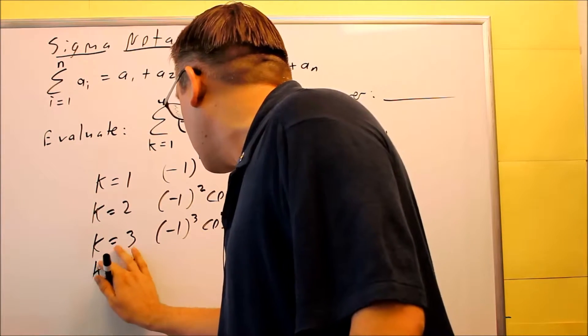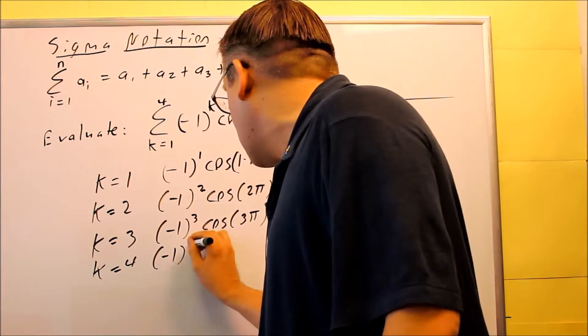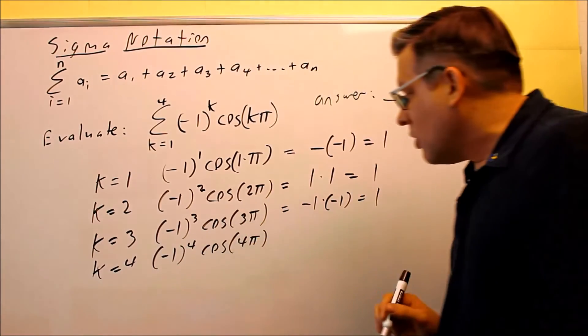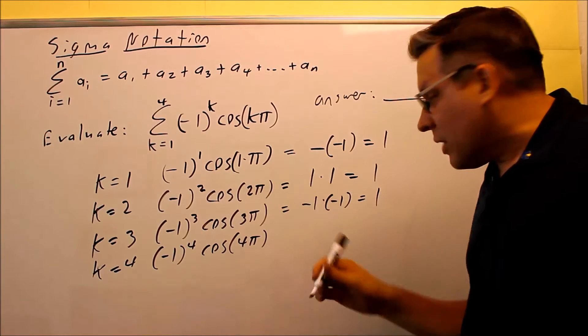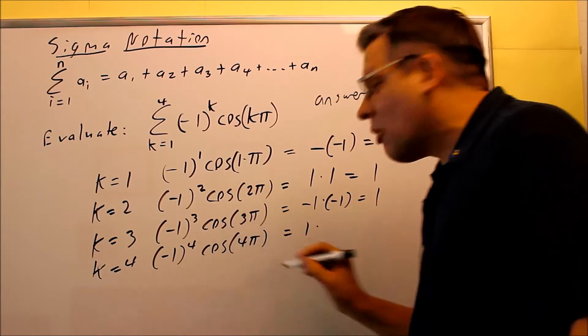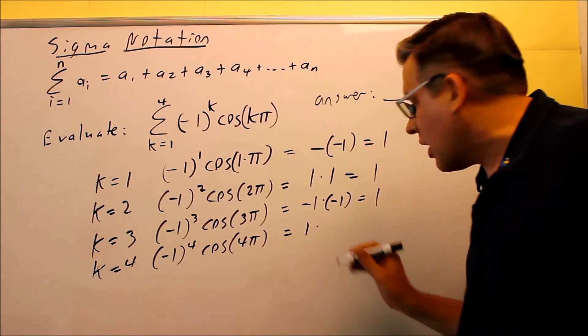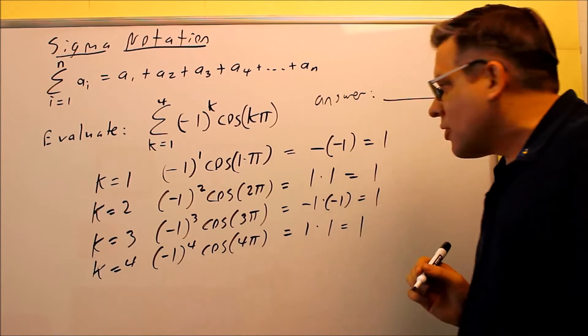And finally, k is equal to 4, and we have negative 1 to the 4th power, cosine of 4π. So negative number to an even power is positive 1. This will be positive here, because you can subtract 2π from it, so cosine 2π is also positive 1. So you get 1.